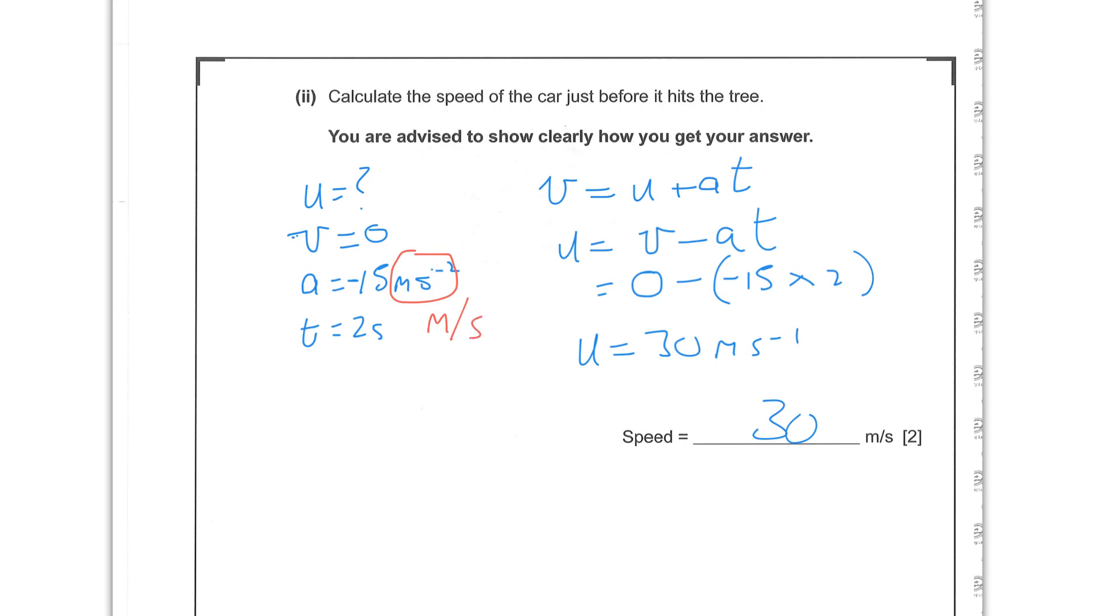Just ignore my use of these oddball units. It should be meters per second squared with a slash and meters per second with a slash, sorry. I'm not meant to use that at GCSE. And that is the end of question one.